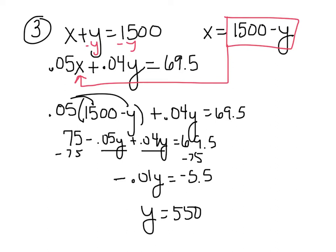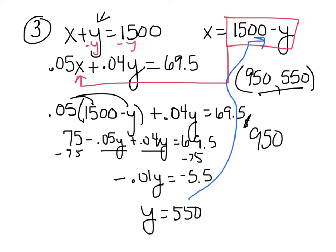Now remember Y was the 4% interest. So Y is 550. So I'm going to take this, plug it in right here for Y to find X. 1500 minus 550 will give us $950. Now you've got to put this in words because this means nothing to me. So what does that mean? It means $950 was at the 5% interest and $550 was at the 4% interest. And that's my answer.